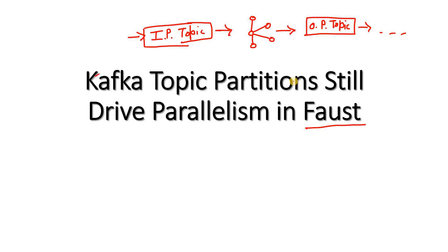Now, how does parallel processing happen in this setup? From the input topic, our Faust application is consuming the data, so it is acting like a consumer. When we studied the Kafka consumer in detail, we explored that if a Kafka topic has three partitions, we can start three consumers under the same consumer group — one consumer per partition — and that is how parallelism is maintained.